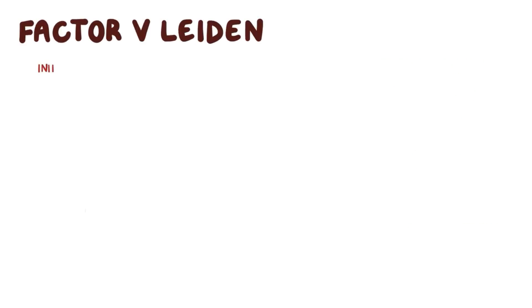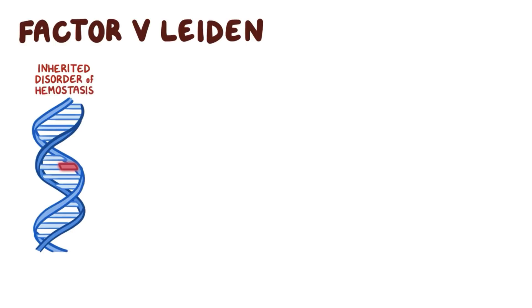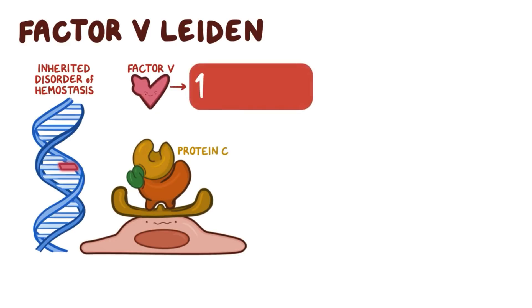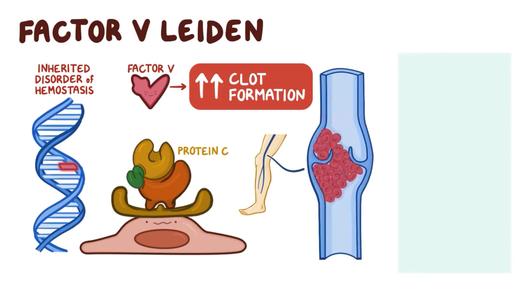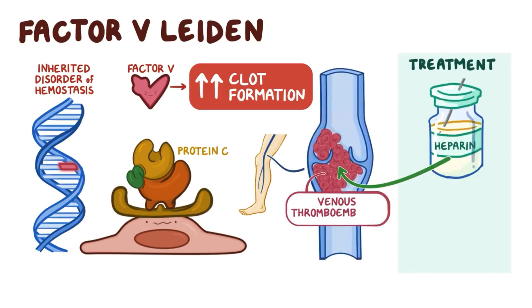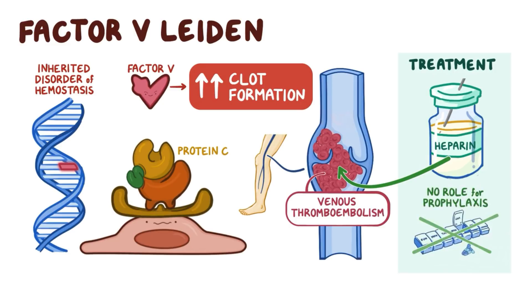As a quick recap: factor V Leiden is an inherited disorder of hemostasis where factor V cannot be cleaved by activated protein C. This results in increased clot formation, most frequently in the deep veins of the leg. Treatment with heparin is done when a venous thromboembolism develops, and studies have shown no role for prophylaxis in factor V Leiden.